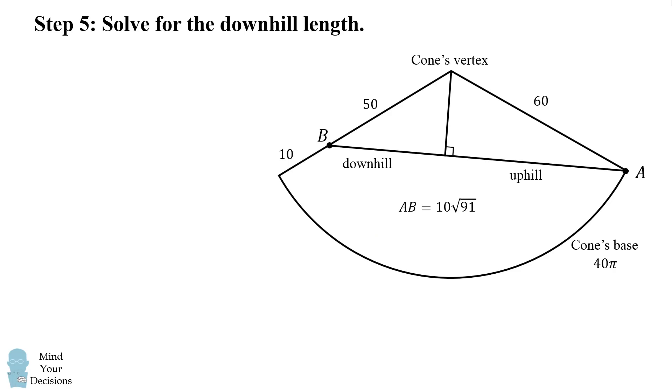Let's label the downhill portion x. The uphill portion will be 10√91 minus x. And let's label the distance from the vertex to the line AB as h.